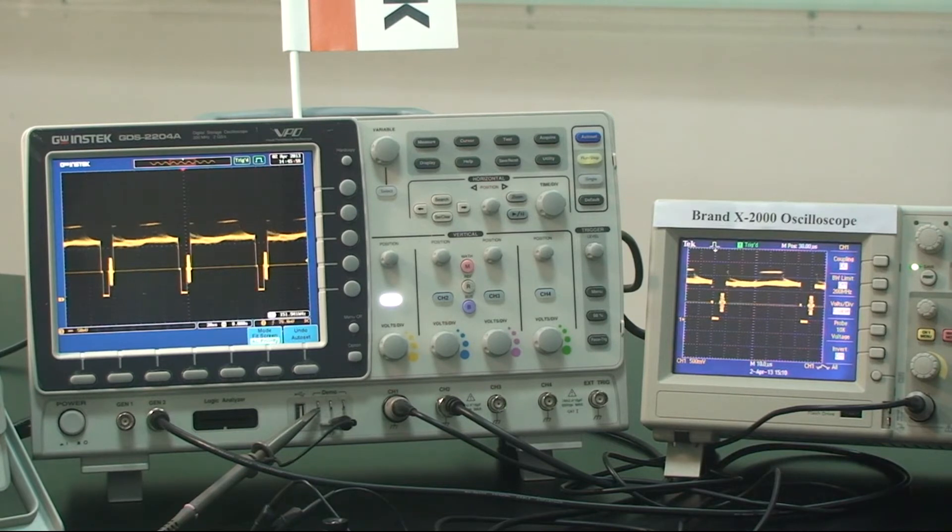Waveform update rate of BRENT-X 2000 is only hundreds of waveforms per second. Therefore, when observing the vertical synchronized signals of BRENT-X, only sporadic update rate can be obtained.